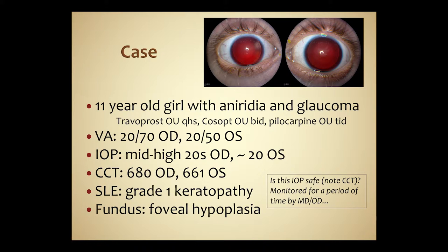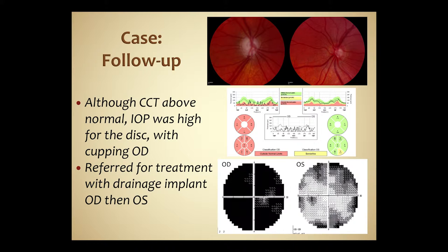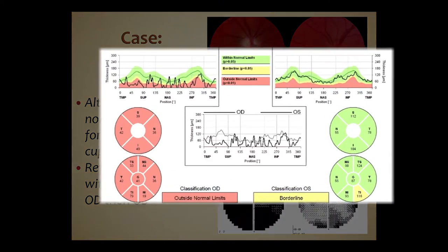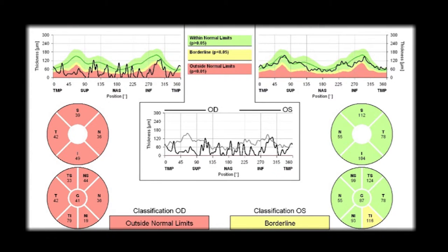Here is an 11-year-old girl with aniridia glaucoma who failed medical therapy, with intraocular pressures in the mid-to-high 20s in the right eye and about 20 in the left. Her central corneal thickness was 680 in the right eye and 661 in the left. She had early keratopathy and foveal hypoplasia on fundus exam, which is common in aniridia. The question arose whether the corneal thickness was artificially elevating the IOP readings. However, she was monitored and the OCT showed marked thinning of the retinal nerve fiber layer in the right eye with advanced visual field loss. She was then treated with surgery in the right eye, which normalized her IOP and she stabilized.